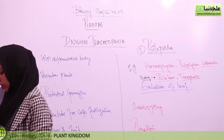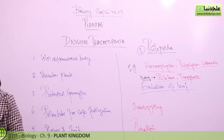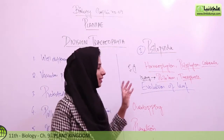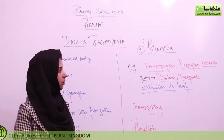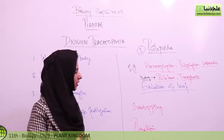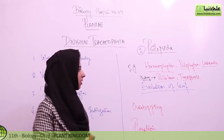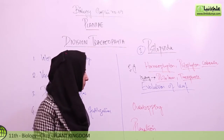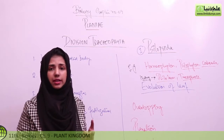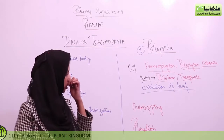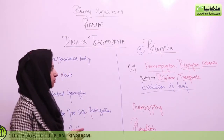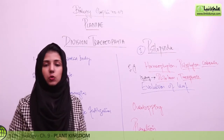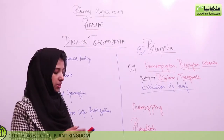There are not many examples. The species Horneophyton and Rhynia are not present on earth right now — they are completely eradicated. The living species are Psilotum and Tmesipteris. In Psilopsida, stems and roots are available — you can also call the stem a rhizome — but true leaves are not present.